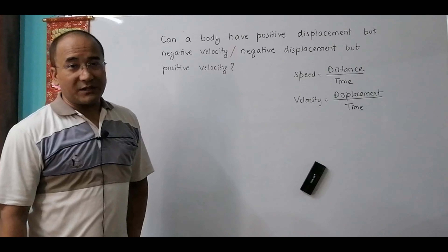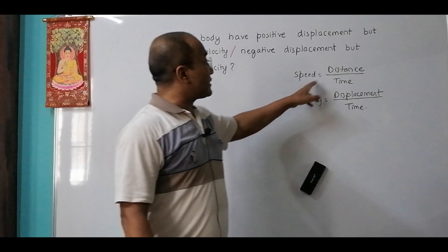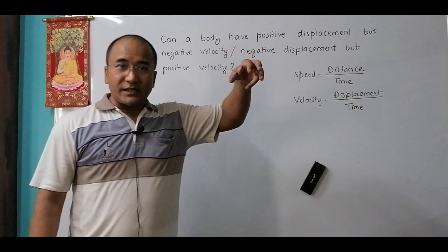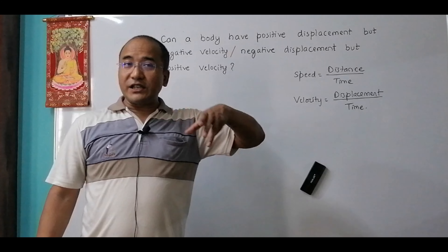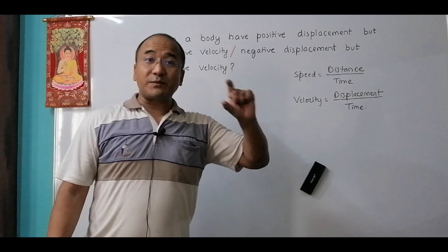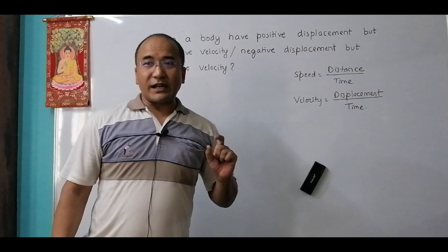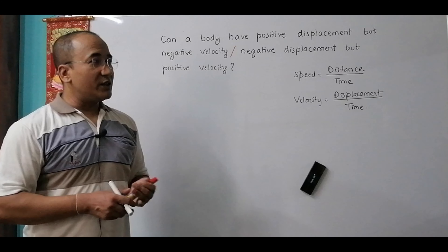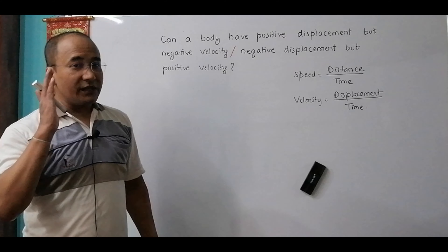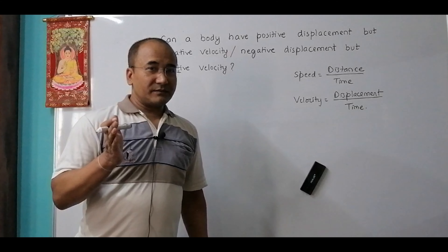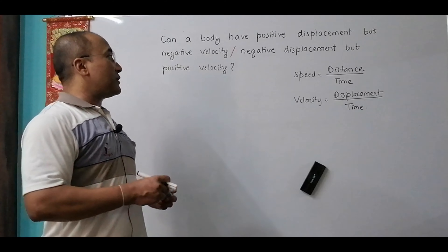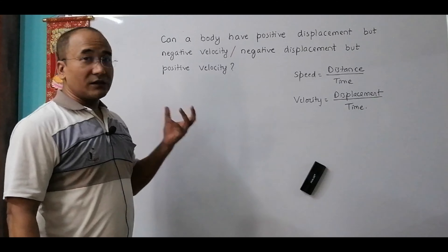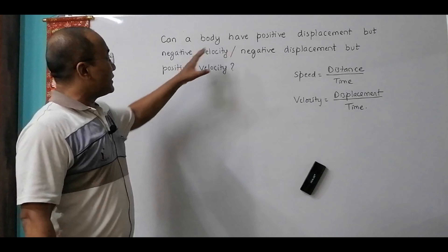At lower levels — say class 5 to class 10 — students are taught that speed equals distance divided by time, and velocity equals displacement divided by time. Going through these simple definitions, one might conclude: if displacement is negative, velocity is negative. Yes, that follows from those definitions.